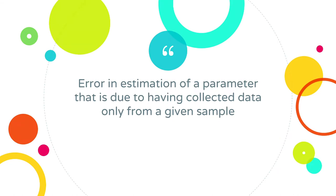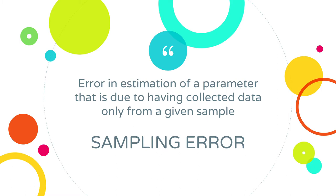We had a couple of definitions. One that we talked about being really important is that there's an error in estimation of a parameter due simply to the fact that you collected a sample. This term was sampling error. Sampling error tells us we can't expect a single sample statistic to be the exact value of the population. So we need some way to gauge whether the difference between a sample statistic and the expected value is meaningful, significant, or unlikely to occur by chance — or is it probably just a chance thing? We want a threshold to say this difference is likely not due to chance.